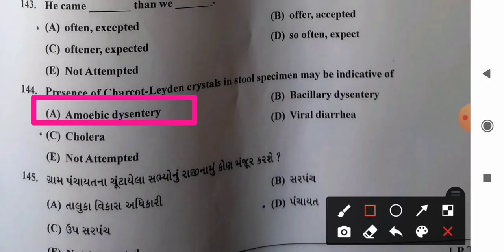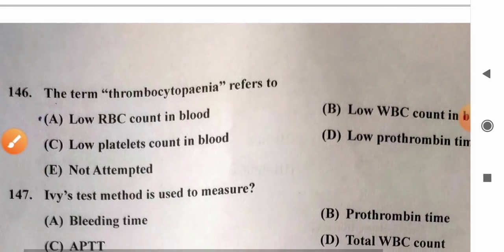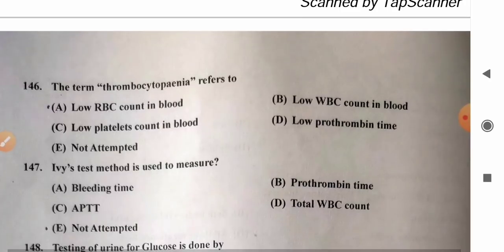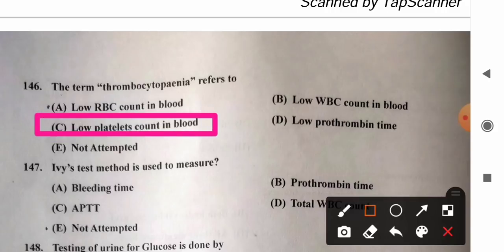Question 146: The term thrombocytopenia refers to — options: A) low RBC count in blood, B) low WBC count in blood, C) low platelet count in blood, D) low prothrombin time. Thrombocytopenia is the term used to refer to a low platelet count in the blood. So option C, low platelet count in blood, is the correct answer.